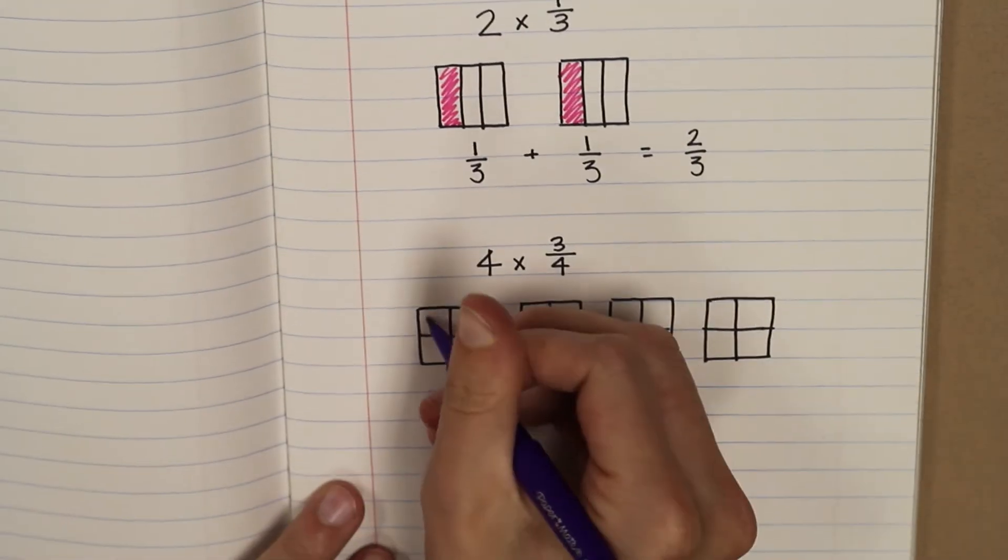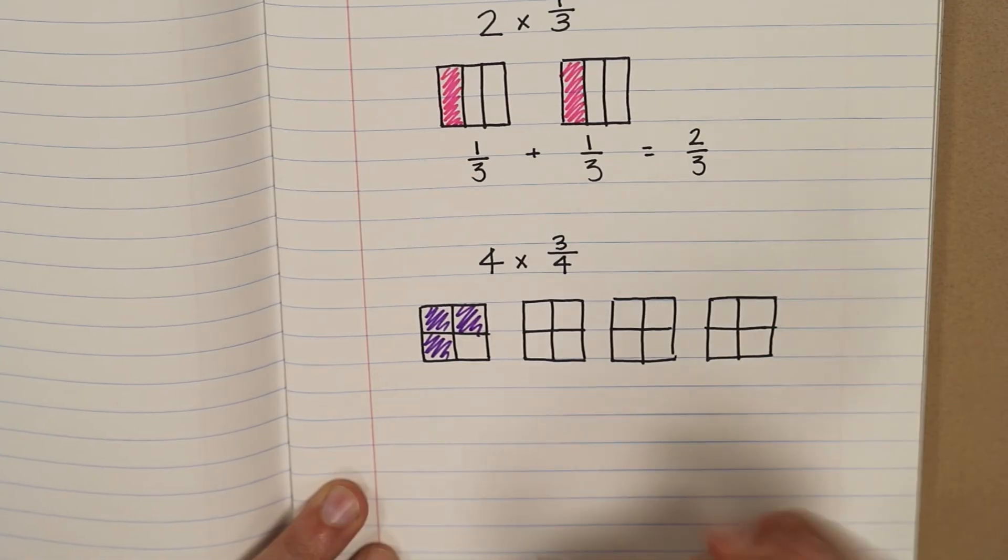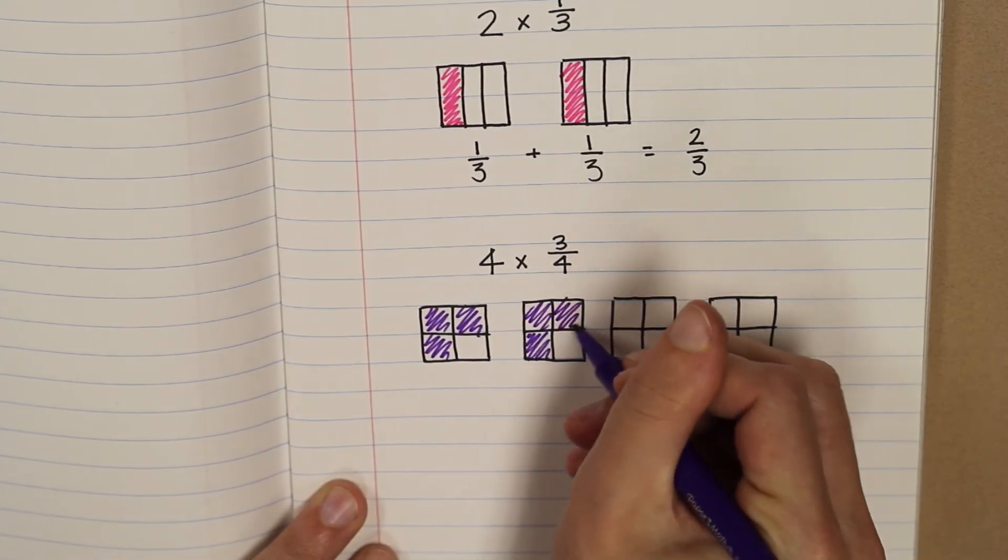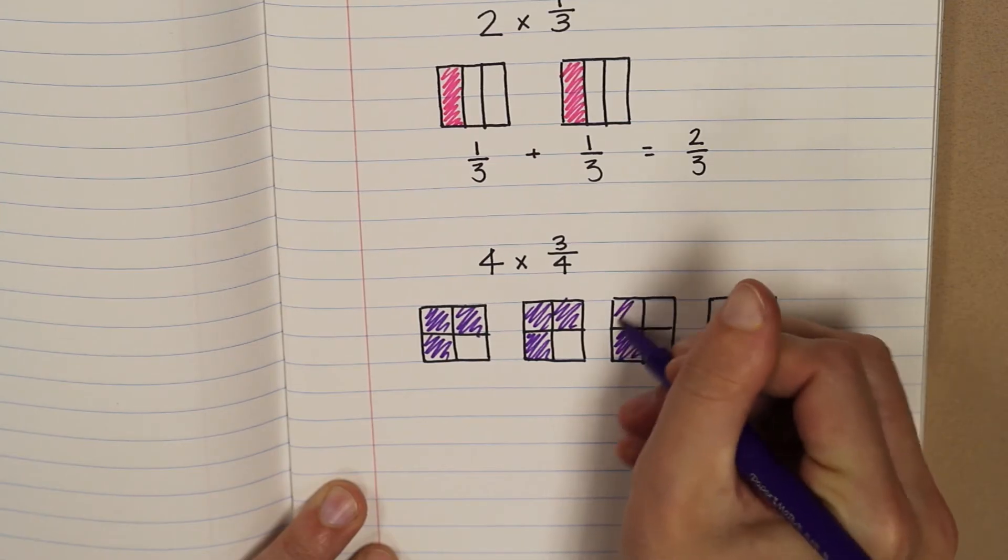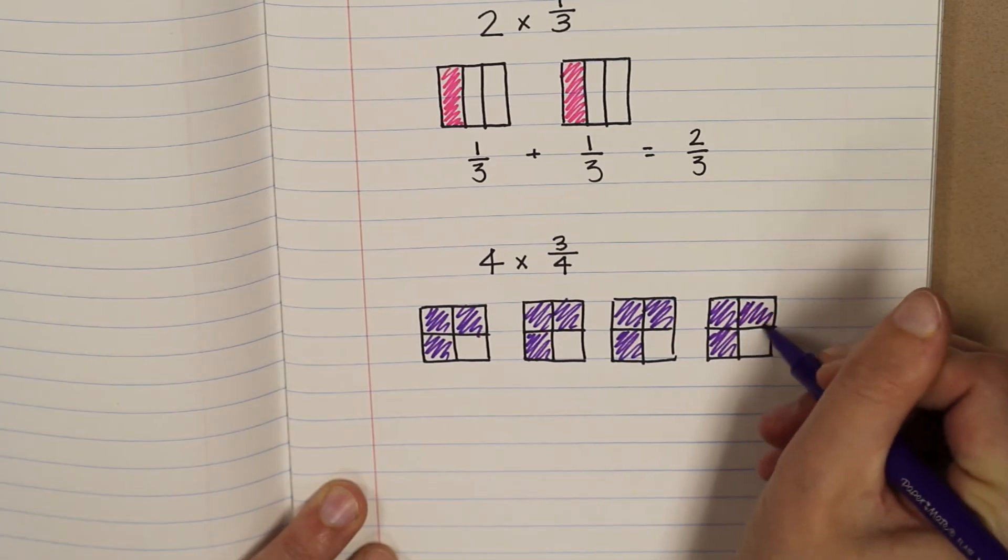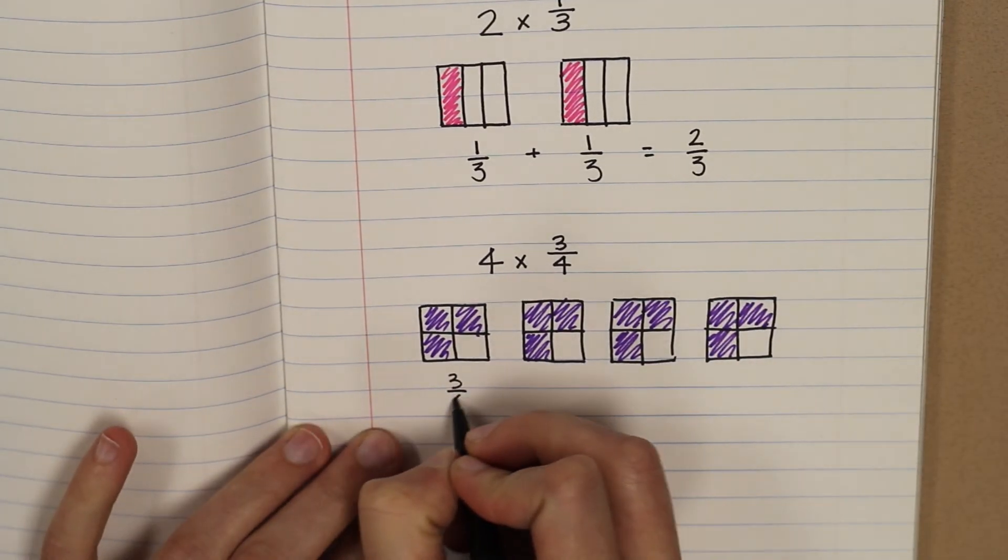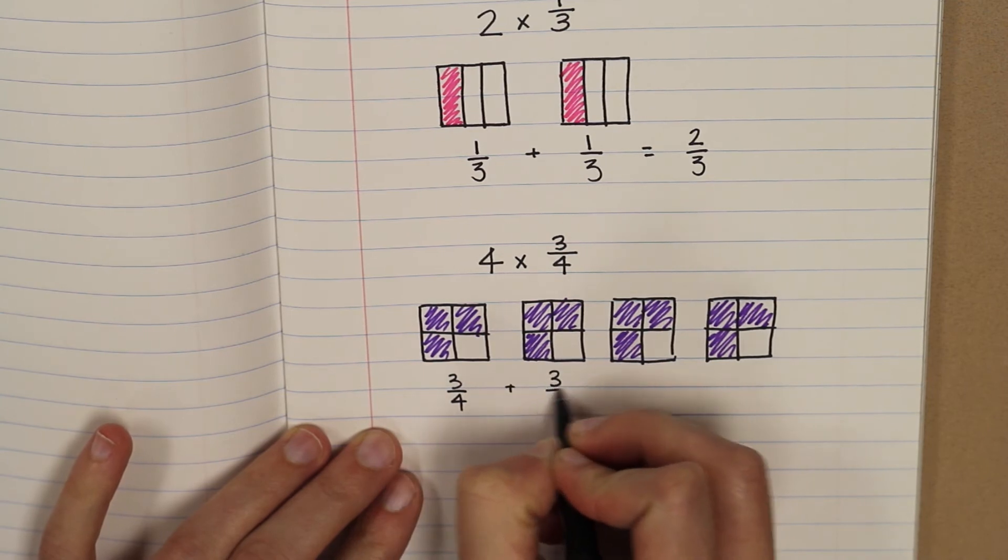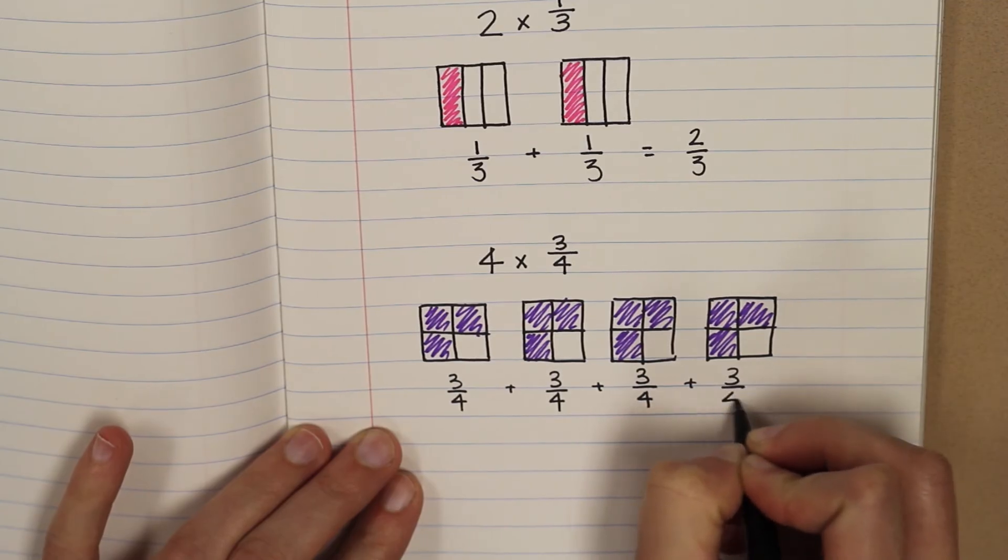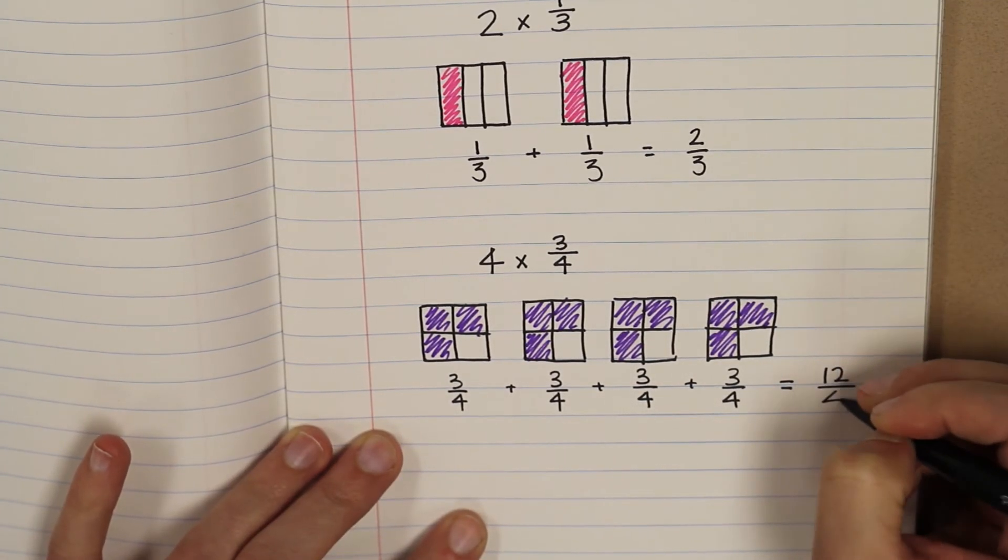And each of these we're going to shade in one, two, three. So this picture represents three-fourths. We'll do that four times. Okay. And we have three-fourths, plus three-fourths, plus three-fourths, plus three-fourths. This equals twelve-fourths.